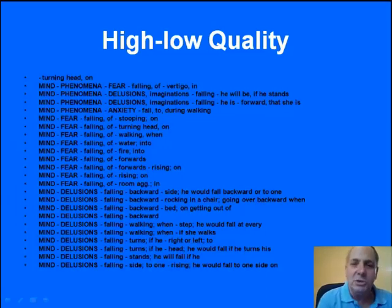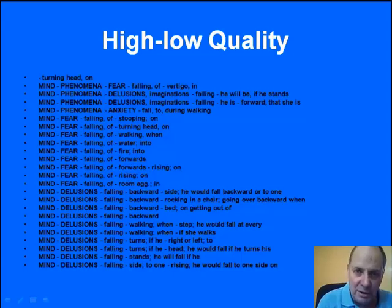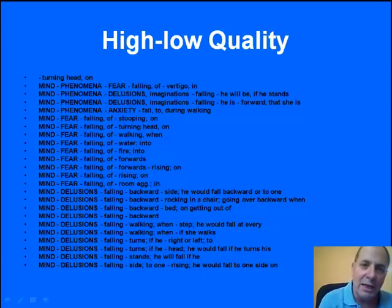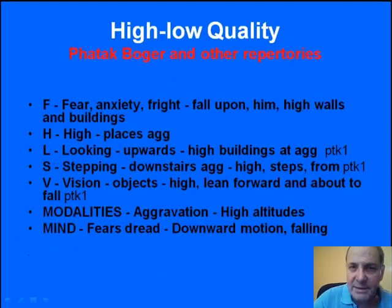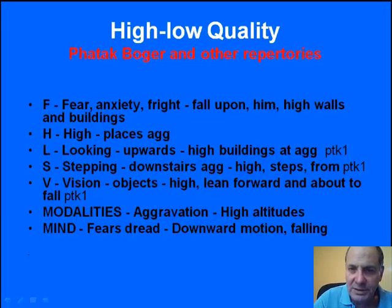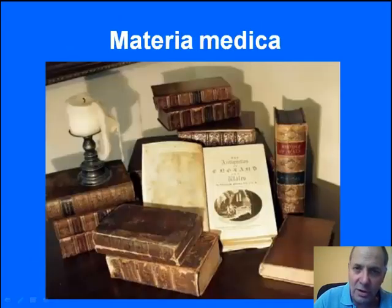We did not just copy or combine these rubrics together. We went through every remedy and looked at it, went back to a source to see where it came from, who added it, was it from a case, was it from a proving, was it a speculation — and according to that, we decided if it fitted and what degree it deserved. We also went through other repertoires. Here is the example from Fatak and Boja of high places aggravates, looking upwards at high buildings aggravates, or aggravation from high altitudes — all that went into the mix of the High-Low quality, but never automatically, always with a lot of thought, study, and examination.